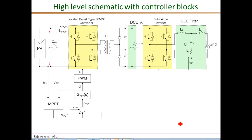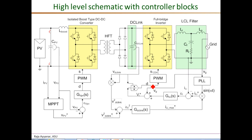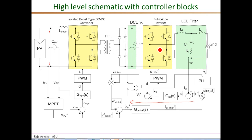The DC-AC stage has two control functions: it needs to control the current injected to the grid, and it needs to regulate the DC link voltage. This is done in a cascaded control fashion, with an inner current control loop and an outer voltage control loop that controls the DC link voltage magnitude. In the inner current control loop, a sinusoidal current reference is compared with the actual grid current, and the error is processed through a current controller — with some feed-forward, which we will discuss in later videos — to directly control the modulation index and phase relationship of the DC-AC stage.